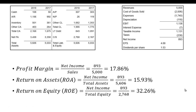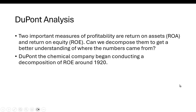As I previously said, you can use these numbers and compare them to a competitor or the industry average. What you might like to do is actually decompose these, and there's something referred to as DuPont analysis. If you decompose return on assets and return on equity, you can get a better understanding of where the numbers came from. This DuPont analysis comes from the fact that the chemical company DuPont started doing this analysis or decomposition of return on equity around 1920.